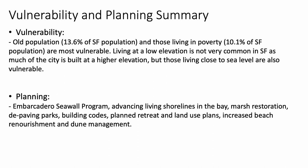The vulnerability and planning summary: about 13.6% of the San Francisco population is elderly, and about 10.1% live in poverty — both are pretty vulnerable groups. Depending on their proximity to low elevation areas, they may or may not be at risk. Much of the city is built at higher elevation, but those living near low elevation areas are definitely vulnerable. Planning initiatives include the Embarcadero Seawall Program, advancing living shorelines in the bay, marsh restoration, deep paving parks, building codes, planned retreat and land use plans, increased beach renourishment, and dune management.